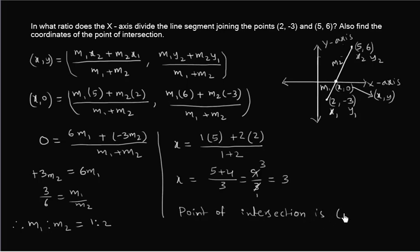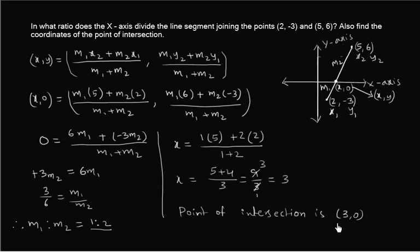So the x-axis divides the line segment in the ratio 1 is to 2, and the coordinates of the point of intersection are 3 comma 0. Thank you all.